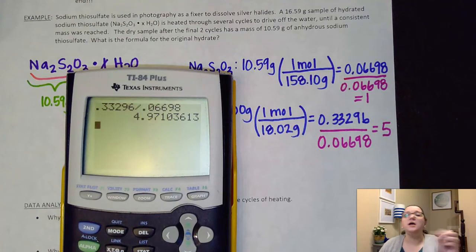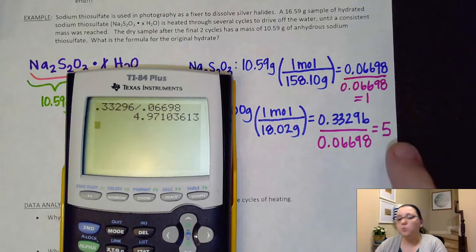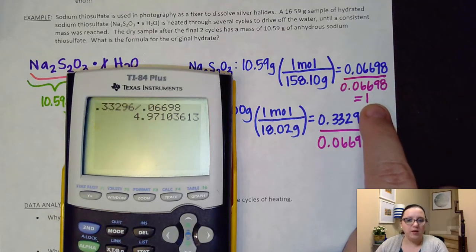However, you never, ever, ever want to multiply to whole on these problems. Because remember, what I do to one number, I would also have to do to the other one. And I don't want to change that ionic compound from being one of it. I always want that to stay one. So we, on these, we round this number to the closest whole number.